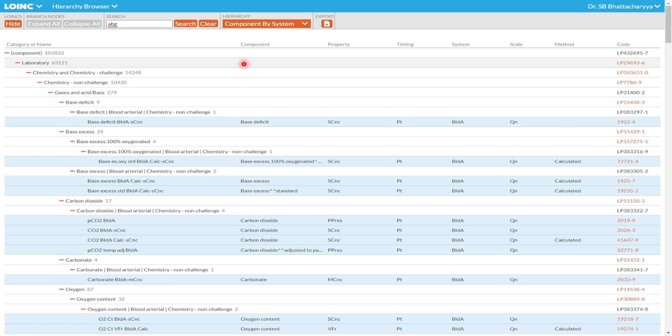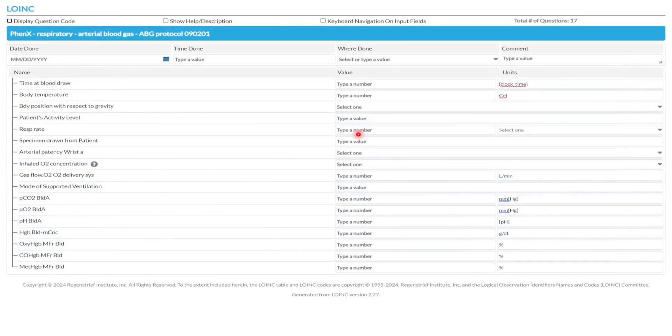This is the screenshot of ABG hierarchy browser component by system view. You see a lot of information is available and you can also see the codes that are relevant for each item; they are given. This is the ABG LHC form view. This can be used as a template to record the various test results easily and quickly.